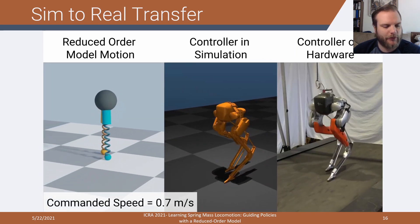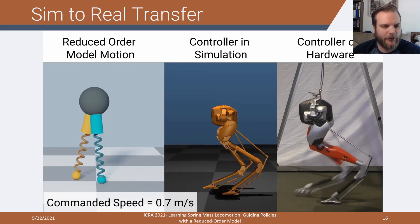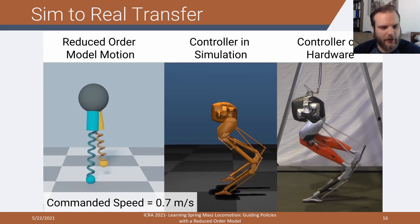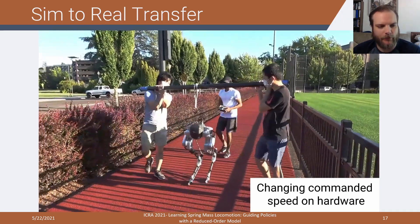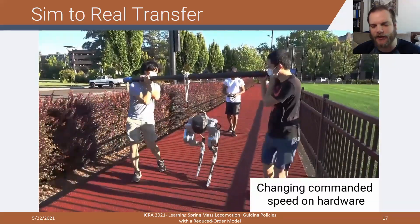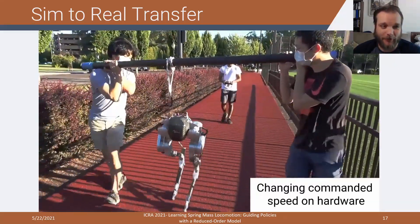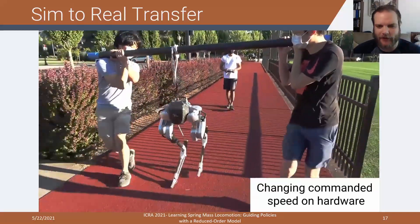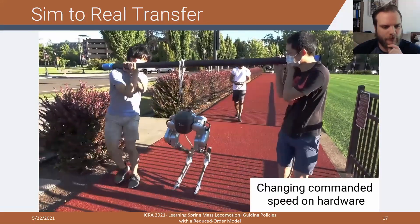We can transfer this from simulation to hardware, and we can see a lot of that pelvis oscillation behavior seems to translate pretty well. We can even perform these speed changes outdoors on hardware. We had to do this outside, not on our treadmill, because if you try to change speeds rapidly on a treadmill, you end up with some weird inertial effects. We have some more videos of this online.